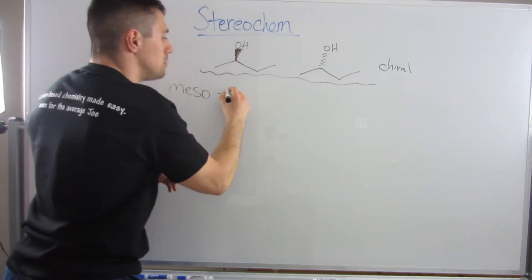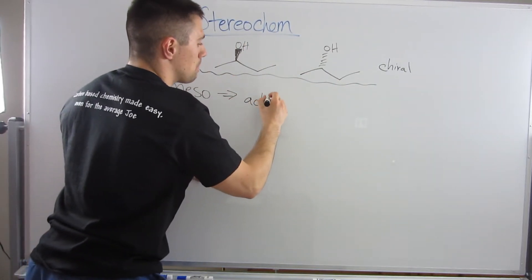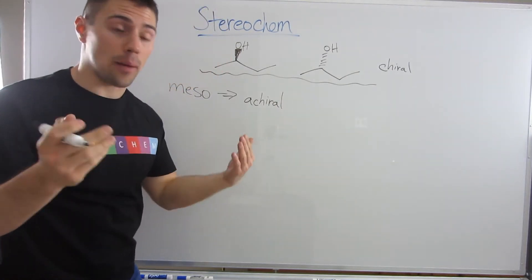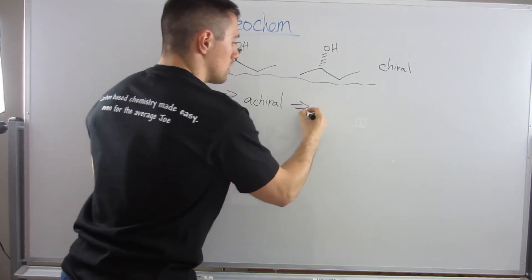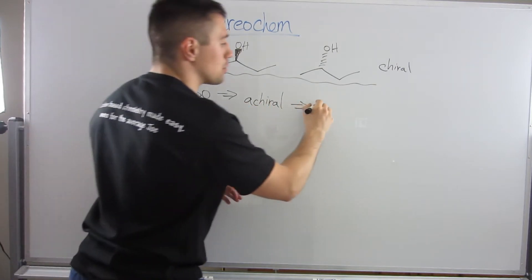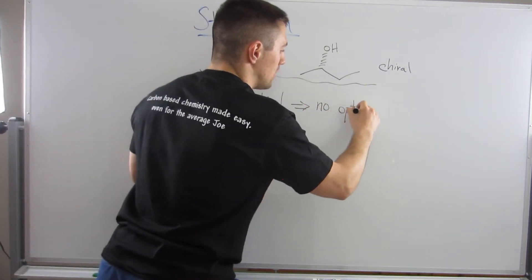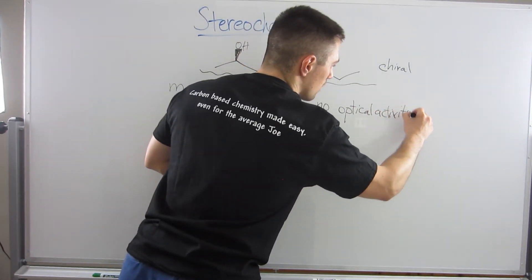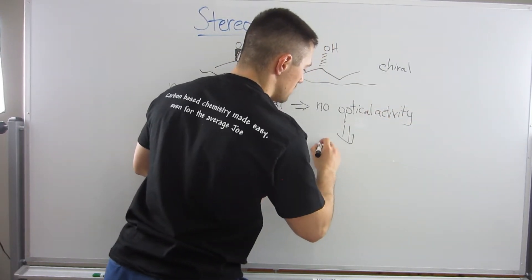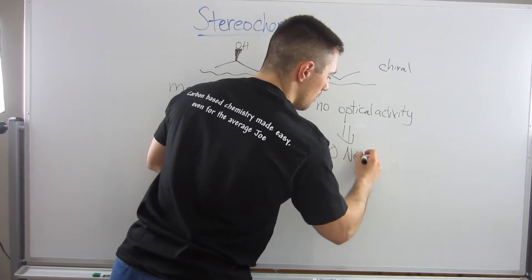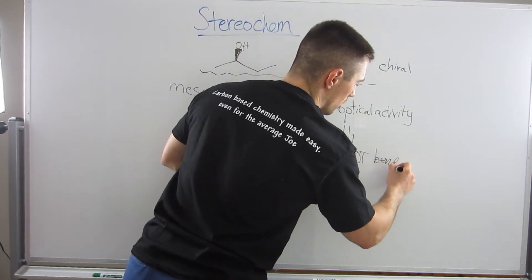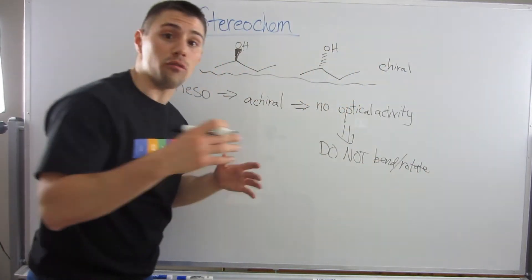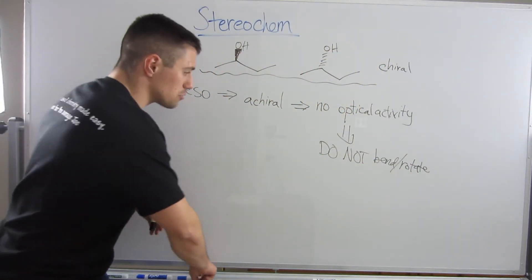If being meso means you are achiral and you need chirality to exhibit optical activity, meso structures that are achiral do not exhibit optical activity. So if you shine light at them, they do not bend, or I guess I should say rotate, the plane of polarized light. So here's what I mean by that.